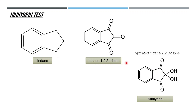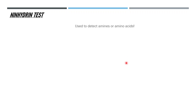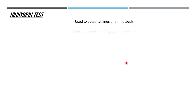The ninhydrin test is used to detect amines and can also detect amino acids. With amino acids the mechanism goes a little further, but let's first see how this test is used in fingerprint development.